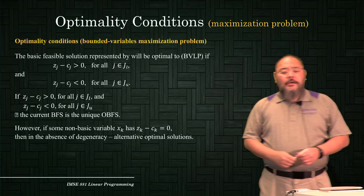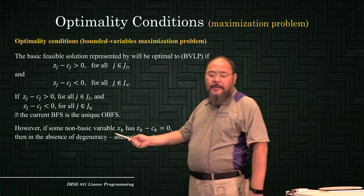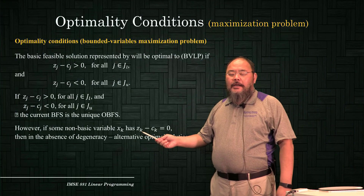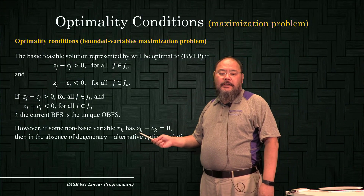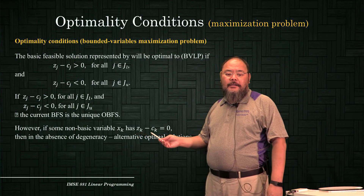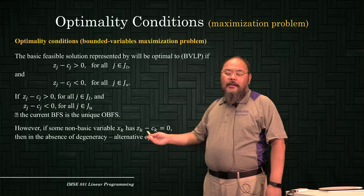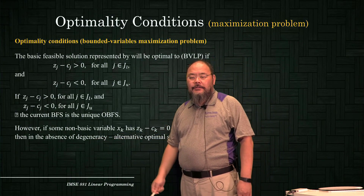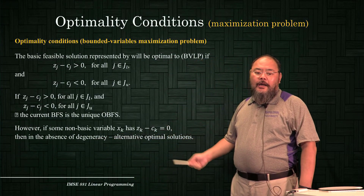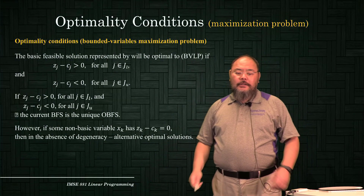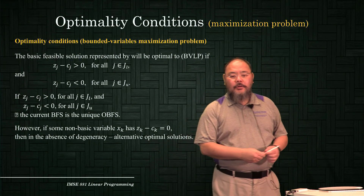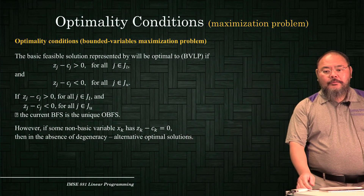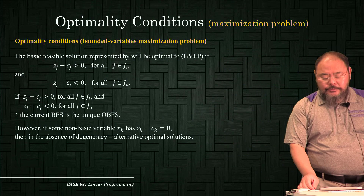If for one non-basic variable xk the corresponding zk−ck equals zero, this is a degeneracy situation and we have multiple optimal solutions, as we introduced before.